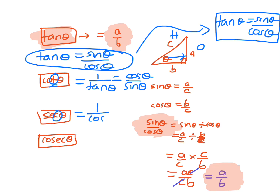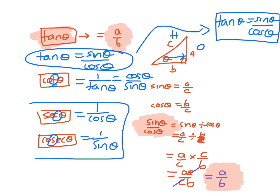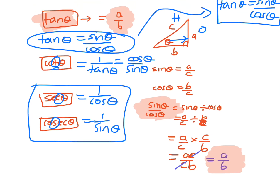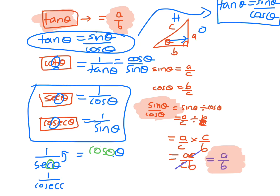Sec: third letter gives one on cos. And cosec: third letter gives one on sine. These reciprocal ratios also work backwards. So if you have one on sec θ and bring it to the top, that will be cos θ — because you go to the third letter, which is C, so that's cos θ. And one on cosec θ would be sine θ — go to the third letter, that's sine, so you can bring it up to the top.